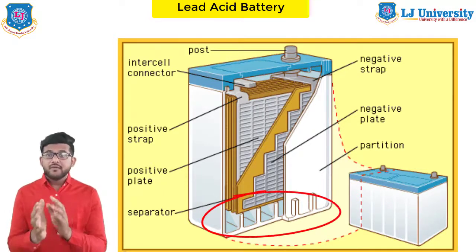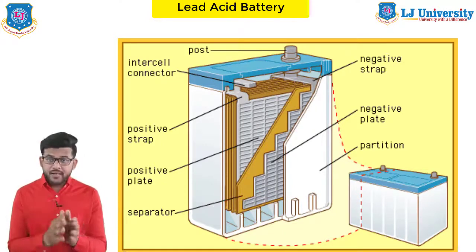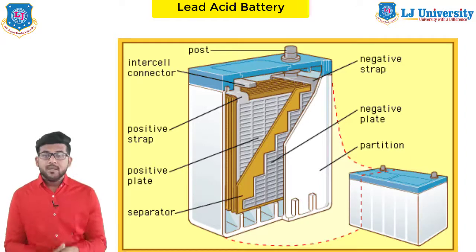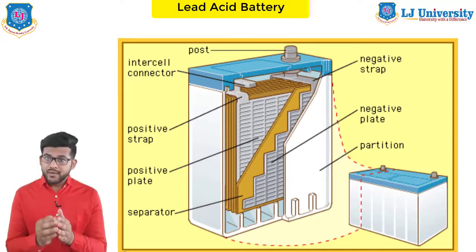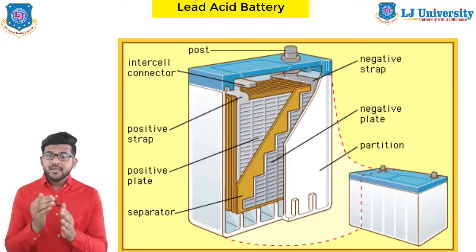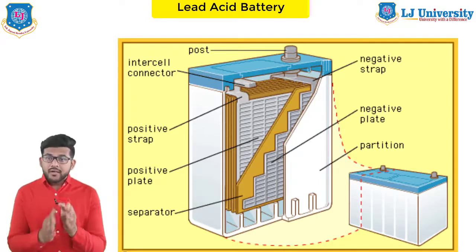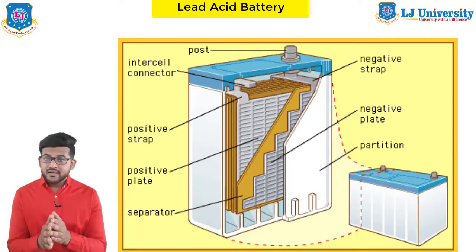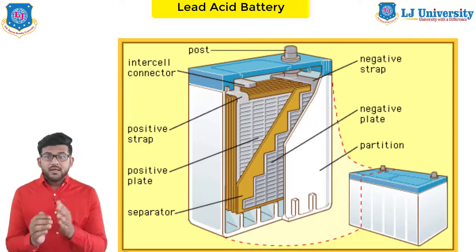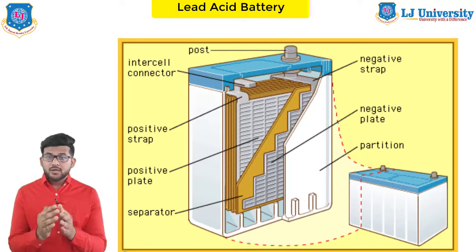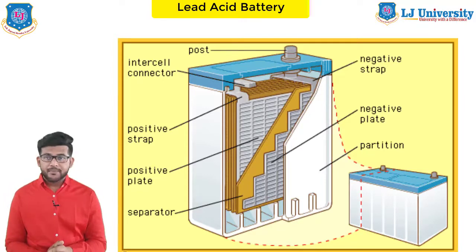At the bottom of the container there are four ribs. On two of them rest the positive plates and on the others the negative plates. The ribs serve as support for the plates and at the same time protect them from short-circuiting between the negative and positive plates. The material of which the battery containers are made should be resistant to sulfuric acid. It should not deform or be porous or contain impurities which could damage the electrolyte.